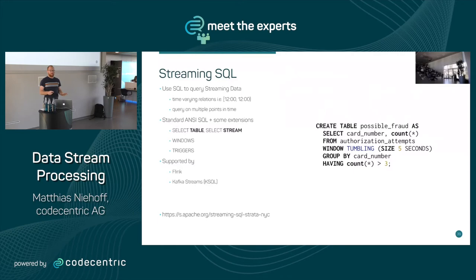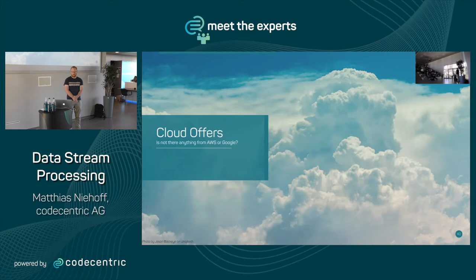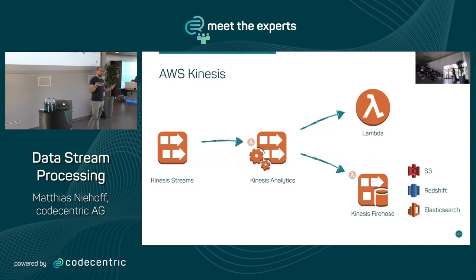All those open-source offerings are for when you want to run it yourself — either on-premise or in cloud infrastructure you manage. But there are fully managed cloud offerings. For AWS and streaming, it's all about Kinesis. Kinesis Streams is, at a high level, Kafka as a service — there are differences, but that's the high-level view. Then we have Kinesis Analytics for stream processing on data stored in Kinesis, and Kinesis Firehose which stores data into databases — a bit like Kafka Connect.